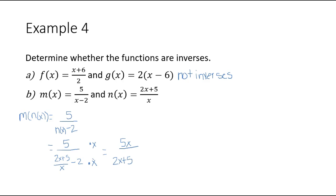The x times negative 2 gives a negative 2x. When I add the like terms in the denominator, the 2x's cancel each other out, leaving me with 5x divided by 5. This fraction reduces, so m of n of x simplifies to x.